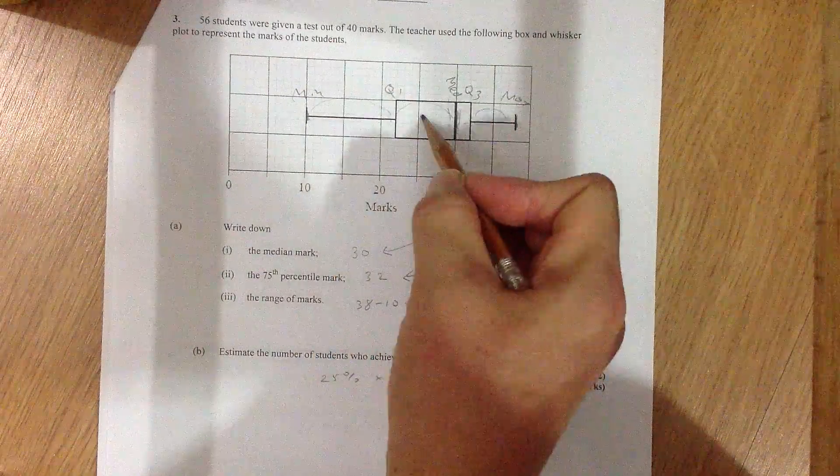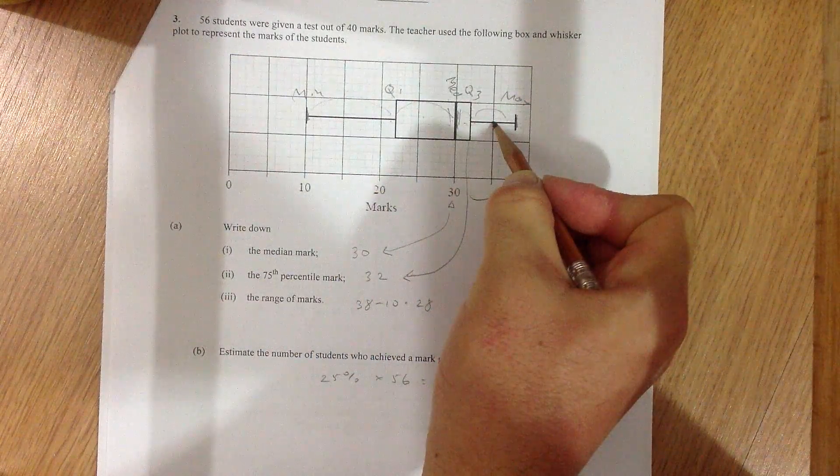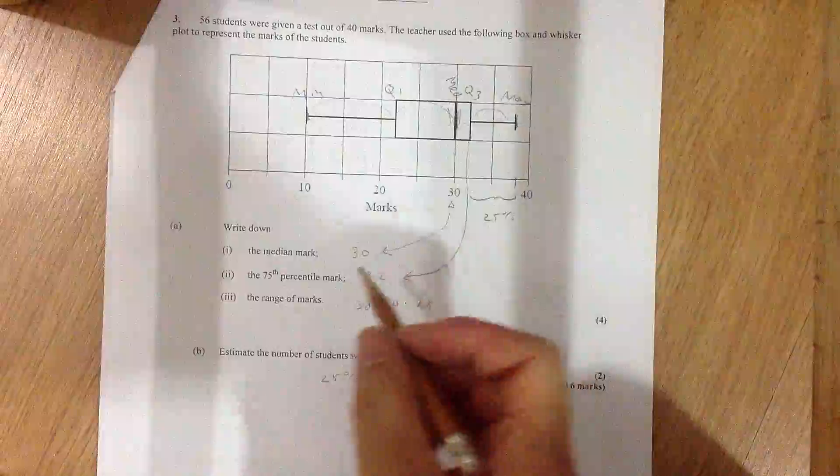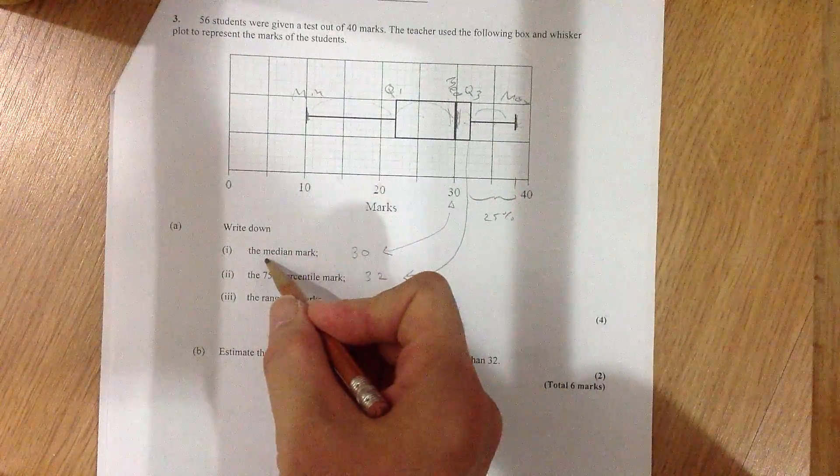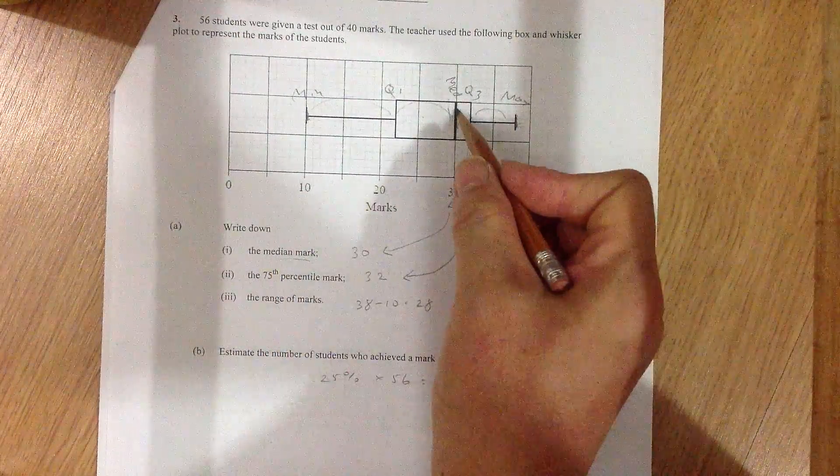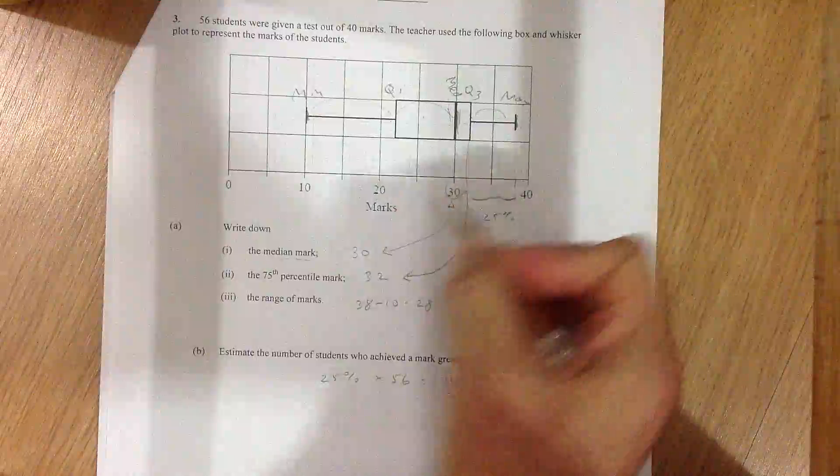When I say midpoint, I don't mean distance-wise. I mean the number of people between min and Q1 is the same as between Q1 and median, and the same between median and Q3, and Q3 and max. So if there's x people here, there's x people here, x people here, x people here. So the median mark is 30, right?